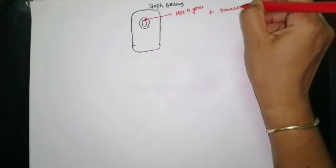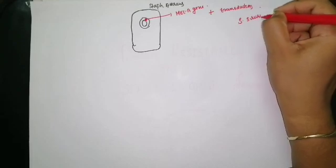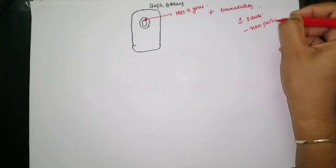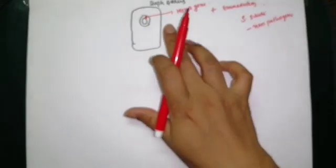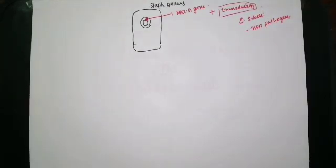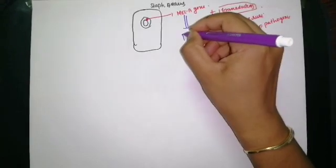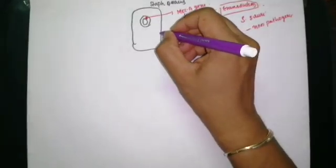The mecA gene was acquired by Staph aureus from Staphylococcus sciuri, a non-pathogenic organism, through the process of transduction — the exchange of genetic material between two bacteria by means of bacteriophages. When the mecA gene expresses, it produces penicillin binding protein 2a (PBP2a), which is an altered binding site where penicillin cannot bind.